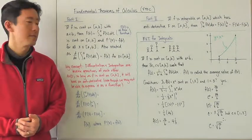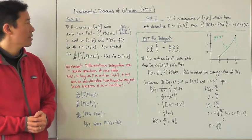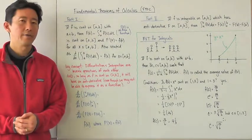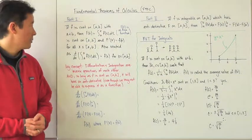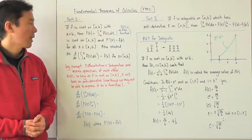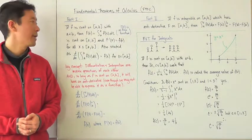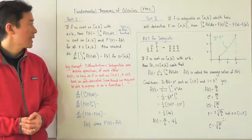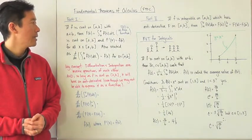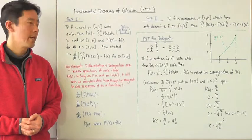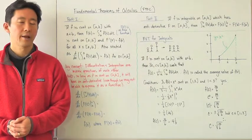Part 1 states this: if f is continuous on a closed interval [a, b], with a less than b, then capital F of x is going to be equal to the integral from a to x of f of t, dt.